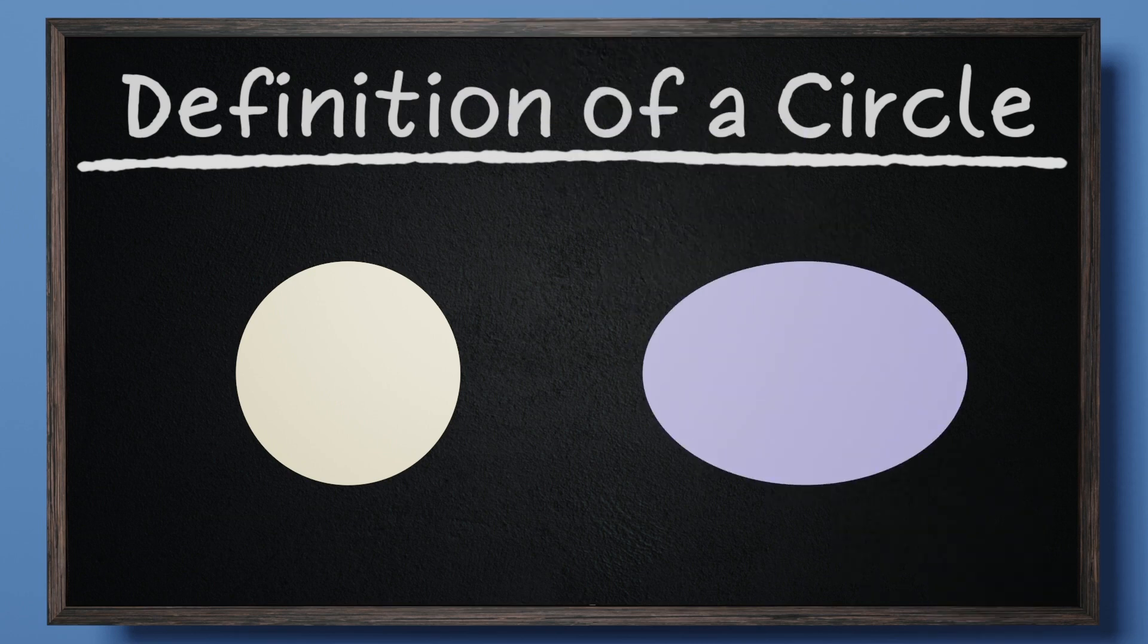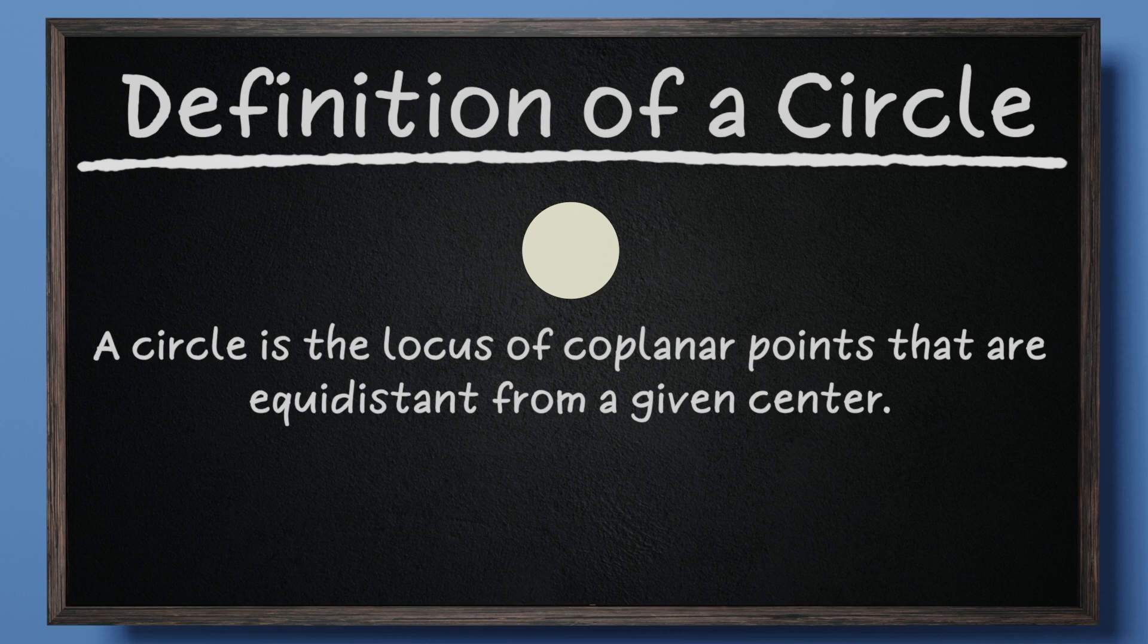Ovals, or an elongated ellipse, fit the same description, and we know ovals are not circles. The following definition makes a clear distinction between circles and other round shapes. A circle is the locus of coplanar points that are equidistant from a given center.